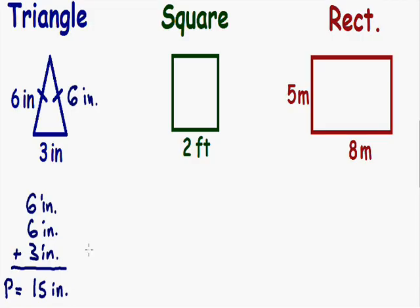Now let's move on to our second example, which is a square. We know that the bottom side of the square has a length of 2 feet. A square has all sides of equal length, so the bottom, left, top, and right sides are all 2 feet.